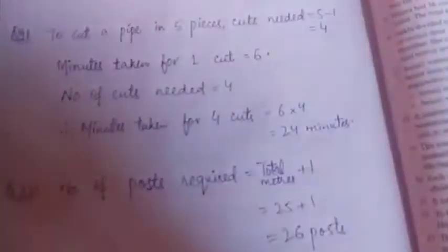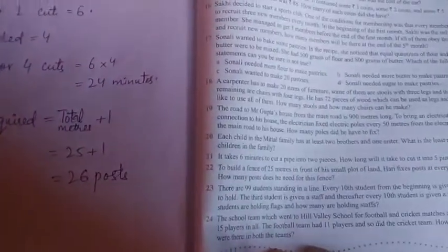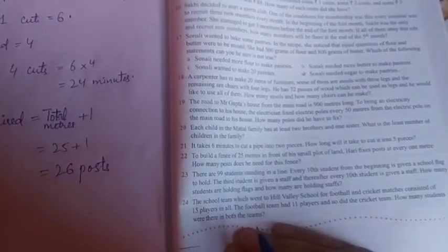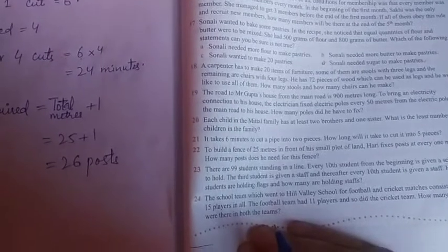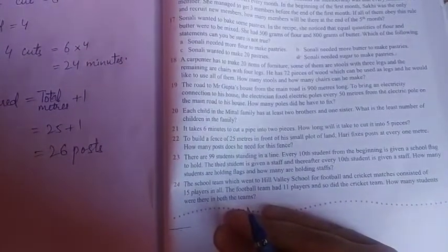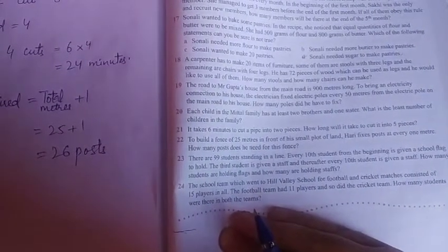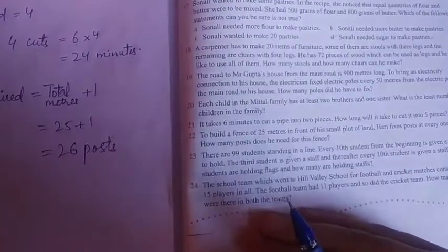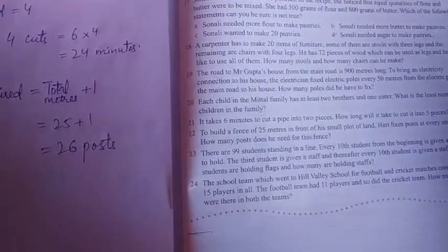That will be six into four. Agar ek cut chhe minute mein ho raha hai, chaar cuts honge six into four, that is 24 minutes. It's very simple students. And the next question is: To build a fence of 25 meters in front of a small plot of land, Hari fixes posts at every meter. So how many posts does he need for this fence?